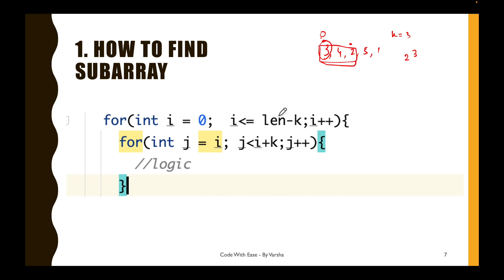Once the inner loop finishes, i increments to 1, giving the next subarray starting from index 1. For array [3, 4, 2, 5, 1] with k=3, the three subarrays are: [3, 4, 2], [4, 2, 5], and [2, 5, 1].